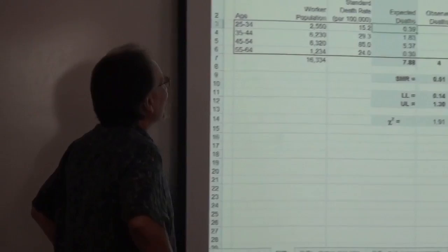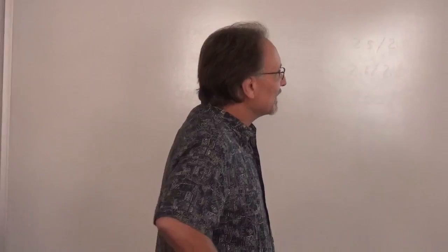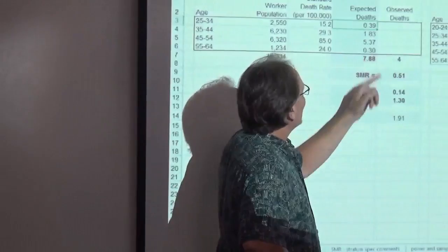So that means we have 0.390 deaths, and we go through the same process to get the number of expected deaths if they were behaving like the standard US population. As you can see, we would expect a lot more — this is a healthier population, just looking at that. And then the SMR is observed divided by expected: 0.51. Is that significant? You can start your confidence interval.